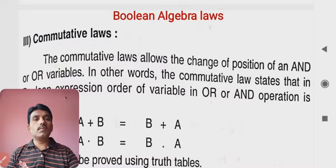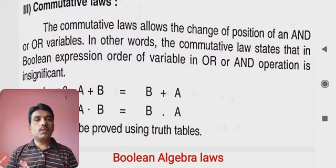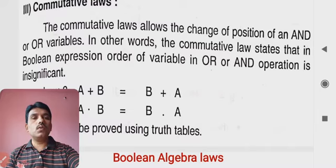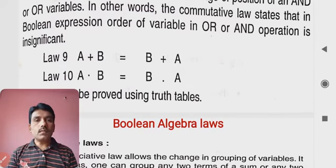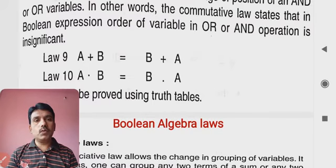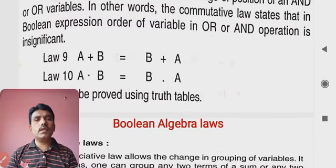The next one is the commutative law. In this case, for logic gates or Boolean algebra, the order of the variables in OR and AND operations is proved here with the truth table. Law number 9: A plus B, meaning A OR B, is equal to B OR A. Either you are adding A plus B, it is always equal to B plus A. Similarly, law number 10: A AND B, that is A into B, is equal to B AND A.